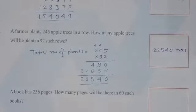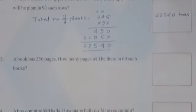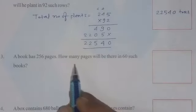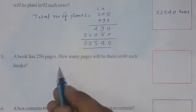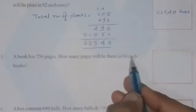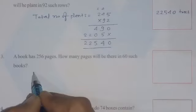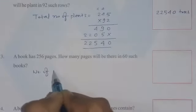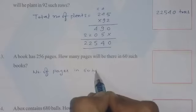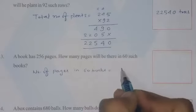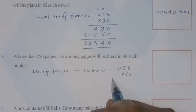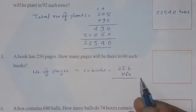Okay students. Similarly, the next question number third is given. A book has 256 pages. How many pages will be there in 60 such books? So in one book number of pages are 256. In 60 books number of pages, number of pages in 60 books equals to 256 into 60. Okay students, so start multiplication.